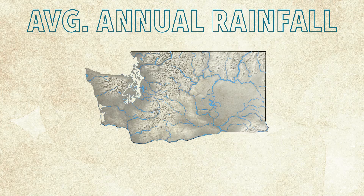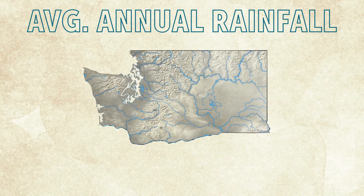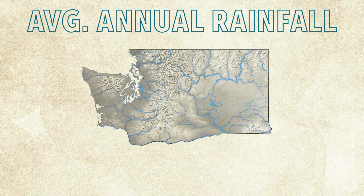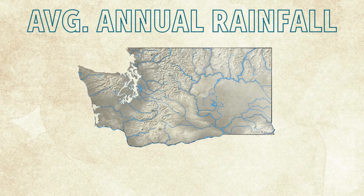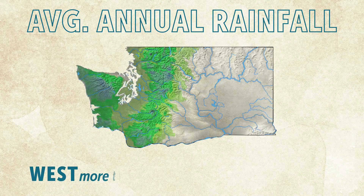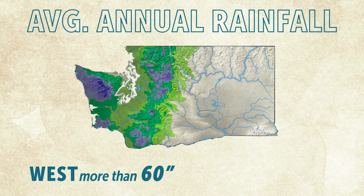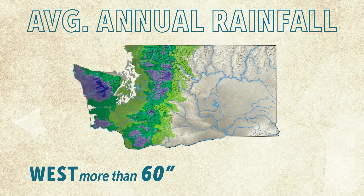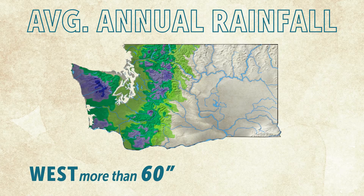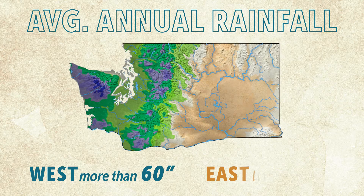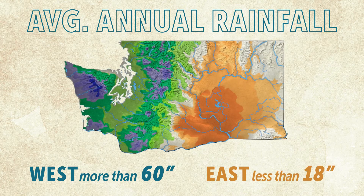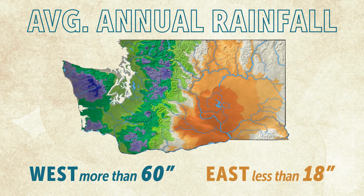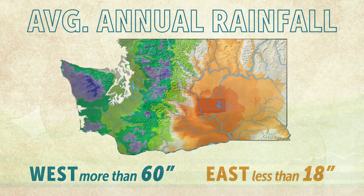In Washington State, different parts of the state get different amounts of precipitation. The areas west of the Cascade Mountains tend to get up to 50 or 60 inches of rainfall, and the areas east of the mountains usually get less than 18 inches of rainfall each year.